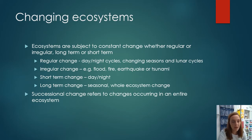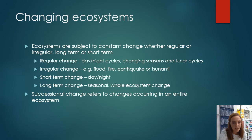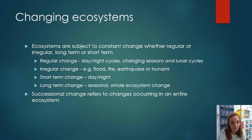Ecosystems are subject to change, and that change can be regular, irregular, short-term, or long-term. Regular change includes day-night cycles, seasonal changes, and lunar cycles affecting tides and marine environments. Irregular change includes random events like flood, fire, earthquake, or tsunami — things that wouldn't be planned for or expected. Short-term change would be day and night, while long-term change could be seasonal or changes occurring to the whole ecosystem over long periods of time.